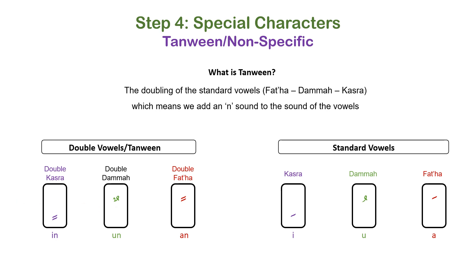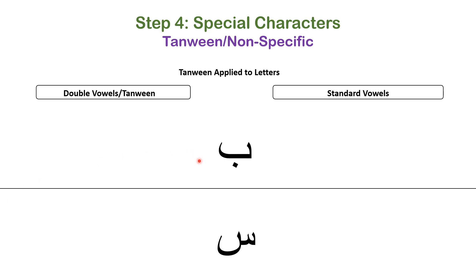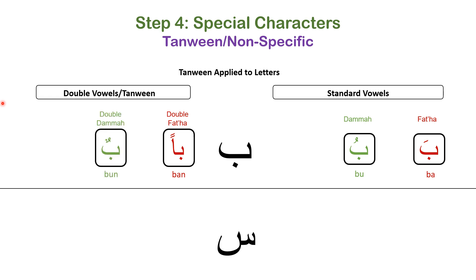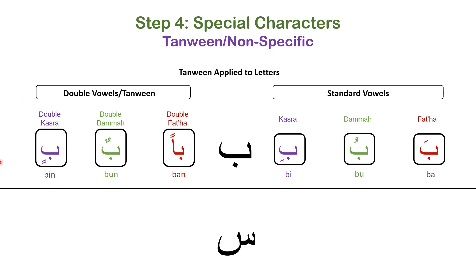Next we'll look at some examples using the letter ba and the letter sin in their standard vowels and doubled vowels, to see exactly how to pronounce these letters when they have tanwin. Fatha on ba is just 'ba', but with a double fatha it is pronounced 'ban'. Dhamma on ba is 'bu', then double dhamma makes it 'bun'. Kasra on ba is pronounced 'bi', and double kasra or tanwin kasra is pronounced 'bin'.